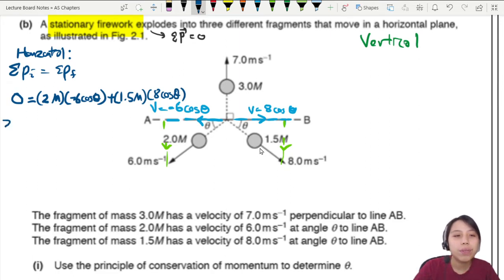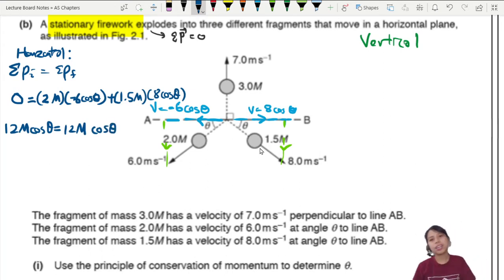Then we can rearrange since one's negative. This will be 12. I have no space. Why am I so crowded today? 12 m cos theta equals to... What is 8 times? It's 1.5, right? 12. 12 m cos theta. What? It cancelled out. Something is wrong here. I cannot find anything.